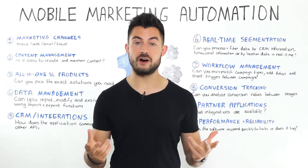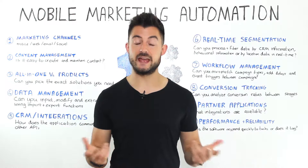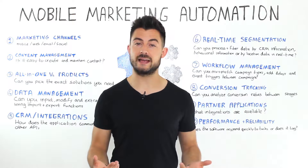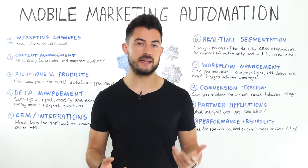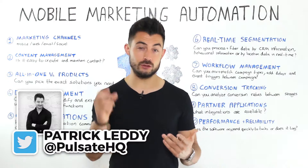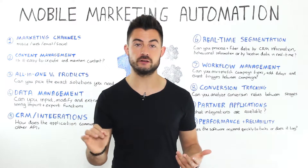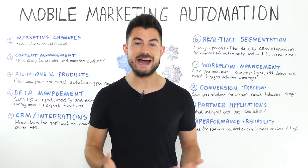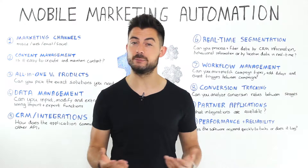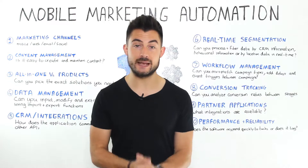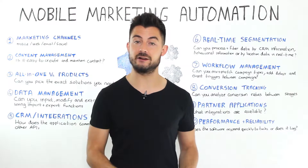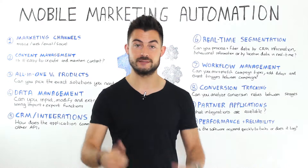So you're sold on the idea of MMA or mobile marketing automation. What do you do next? How do you assess the different vendors in this space and what are the things you need to check off to ensure you're getting the software that you need and that it can handle all of the requirements and demands that your business will place upon it? In this episode I want to show you all of the things you need to consider when purchasing an MMA solution. Let's jump in.